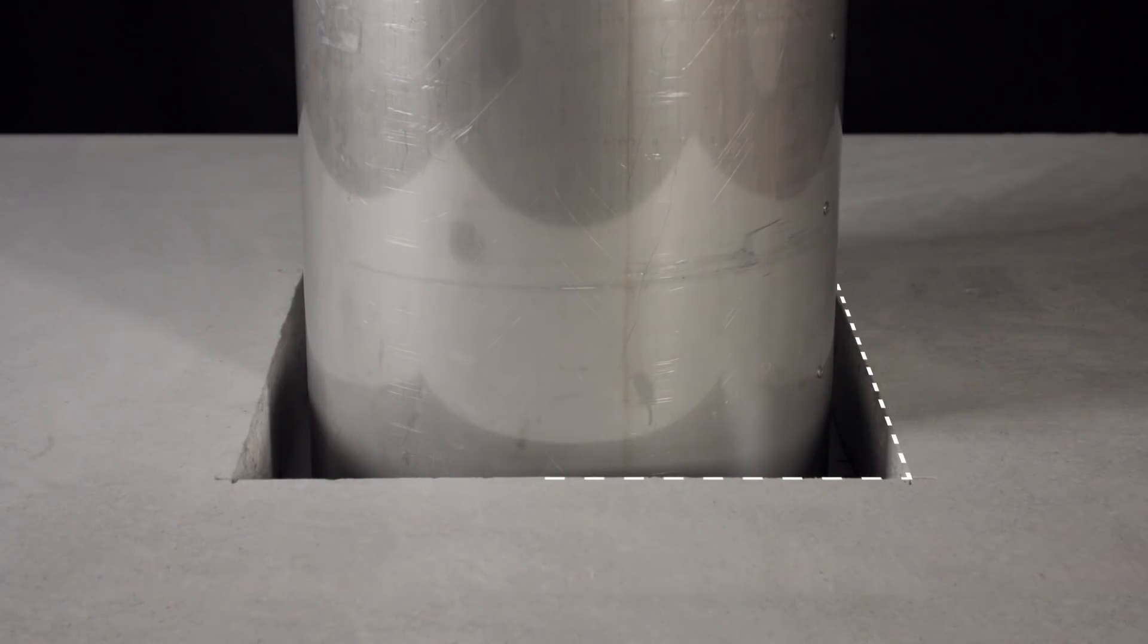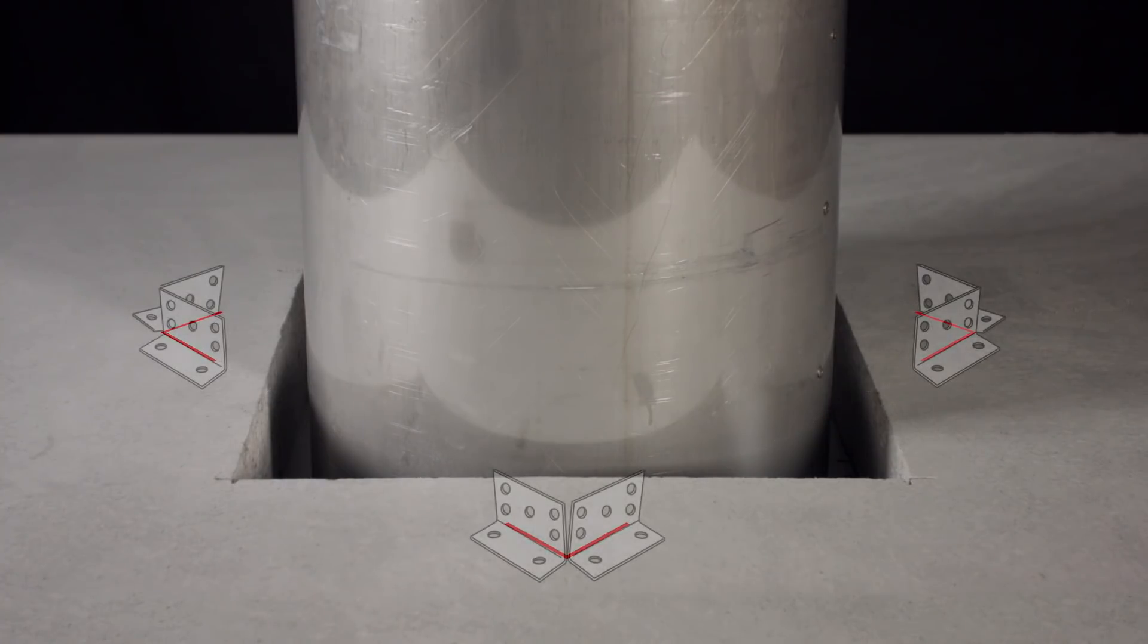Create a template of the square opening in the floor and turn the template 45 degrees so that each corner of the template is centered on each side of the opening. Mark the location of the template corners as the location of the floor mounting brackets.